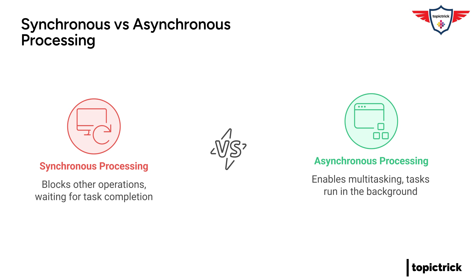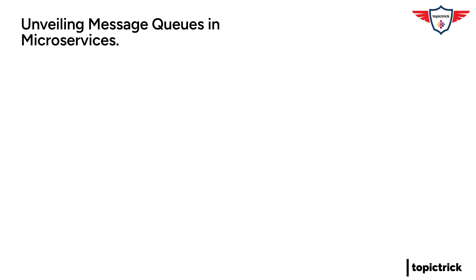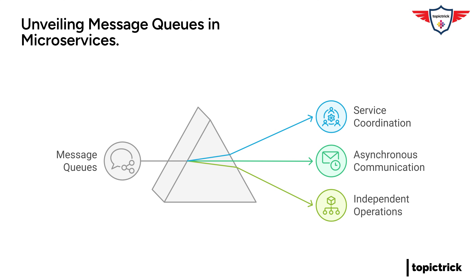Where do we actually see message queues in action in the real world? One common use case is in microservices communication. In a microservices architecture, an application is broken down into smaller independent services that need to talk to each other. Message queues act as the messengers, facilitating seamless and efficient communication between these services. It's like having different teams in the restaurant — the appetizer chefs, the grill masters, the pastry team — all coordinating their efforts. Message queues are like the coordinators making sure all those different parts of the application are working together in harmony.